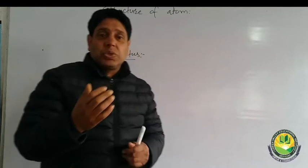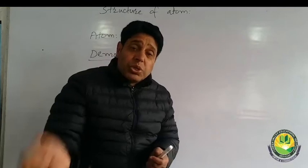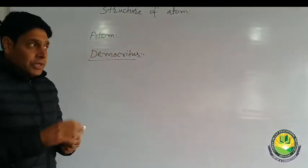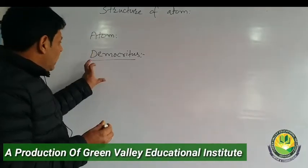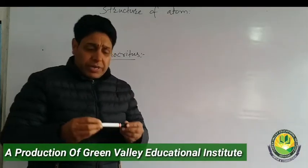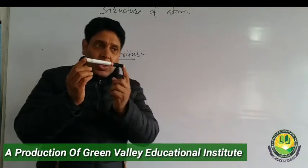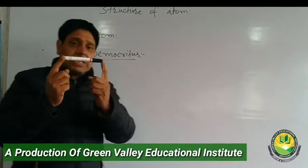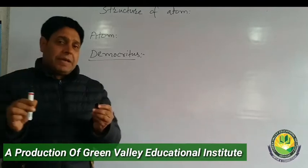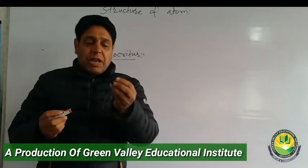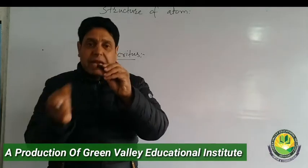Greeks wanted to know what the composition of matter is — what matter is made of. A concept emerged. Democritus said that if we take something — suppose this is an iron rod — and we divide it into two pieces, we leave one part and take the other, and divide that further into two pieces.